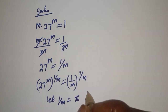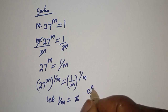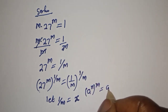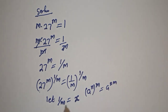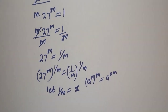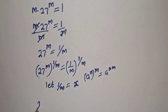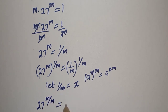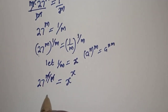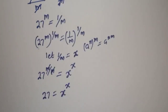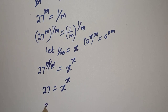Using the rule that a raised to power n, to the power of m, equals a raised to power m·n, we get 27 raised to power m over m, which simplifies to 27, equal to s raised to power x.